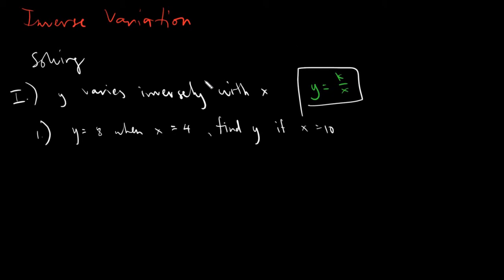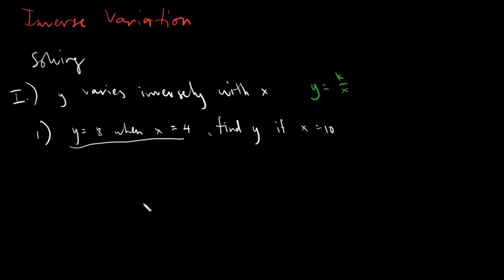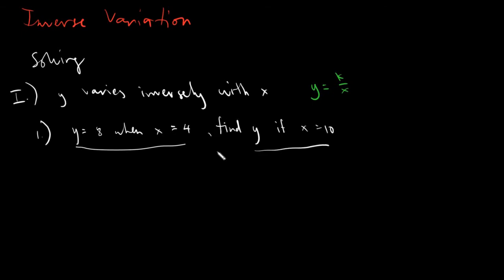So the second thing you need to do is list down your variables. You will notice that there would be two sets of variables — y and x. You will have two sets: the first set being y sub 1 and x sub 1, which is already complete. And you will have the second set where y sub 2 is unknown, and x sub 2 is 10.